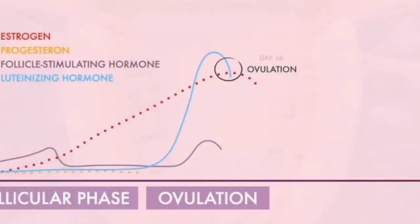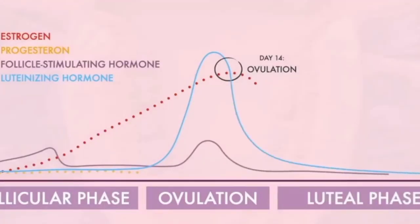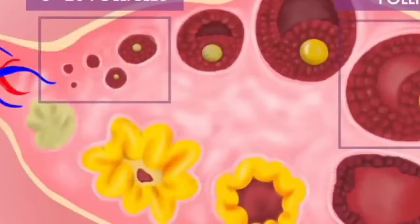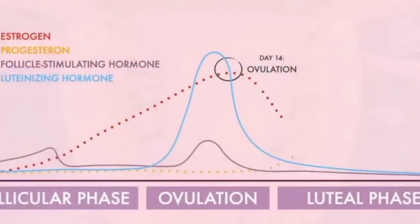During the luteal phase, luteinizing hormone and follicle-stimulating hormone levels decrease. The ruptured follicle closes after releasing the egg and forms a corpus luteum, which produces follicle-stimulating hormone and progesterone, causing the lining of your uterus to thicken even more.